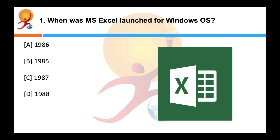When was MS Excel launched for Windows Operating System? The correct answer is 1987. Microsoft released the first version of Excel for the Mac OS in 1985, and the first Windows version was released as a spreadsheet editor.